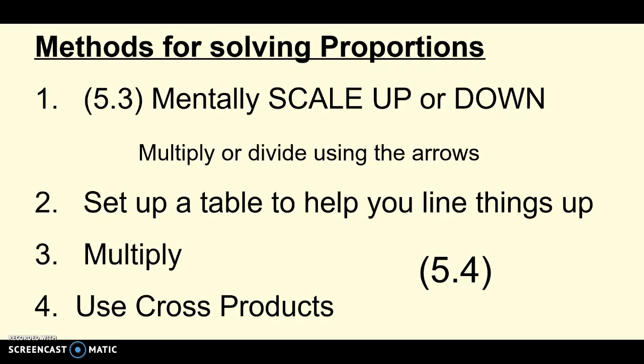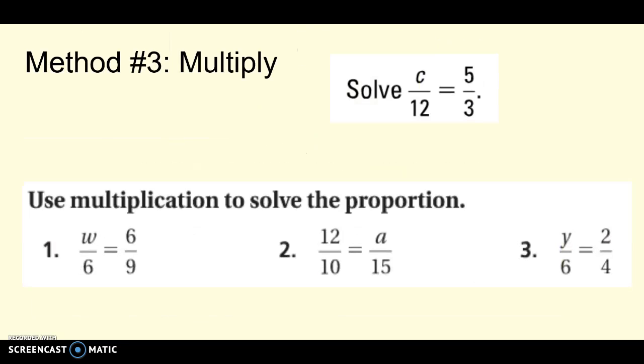So to continue our list, in 5.3 we said there were two methods to kind of do it in your head with those arrows where we showed the arrows of how to get a missing number. We also set up that tic-tac-toe table to keep things lined up. And in this section we're going to be learning two new strategies. So here's the first one, to multiply. Just use multiplication.